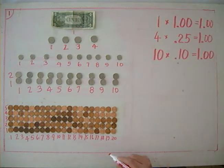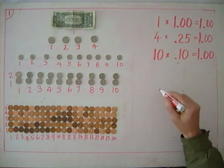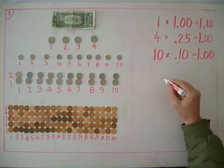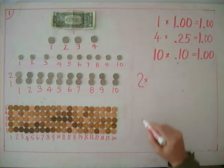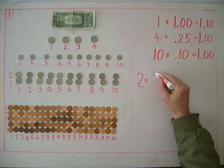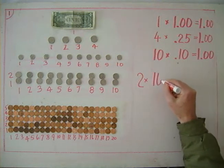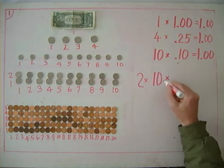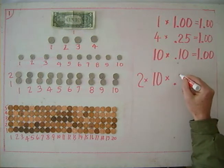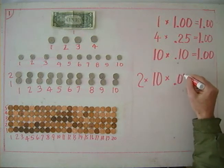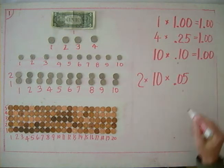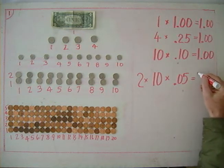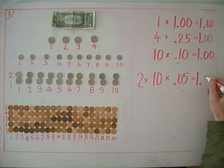Next we got some nickels. We got two rows of nickels — two rows times ten in a row, times each nickel is 0.05 dollars — and that equals one dollar if we multiply those out together.